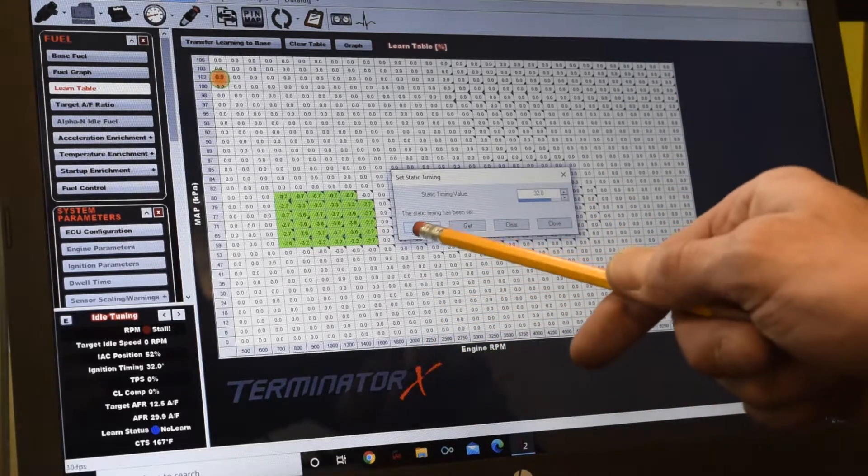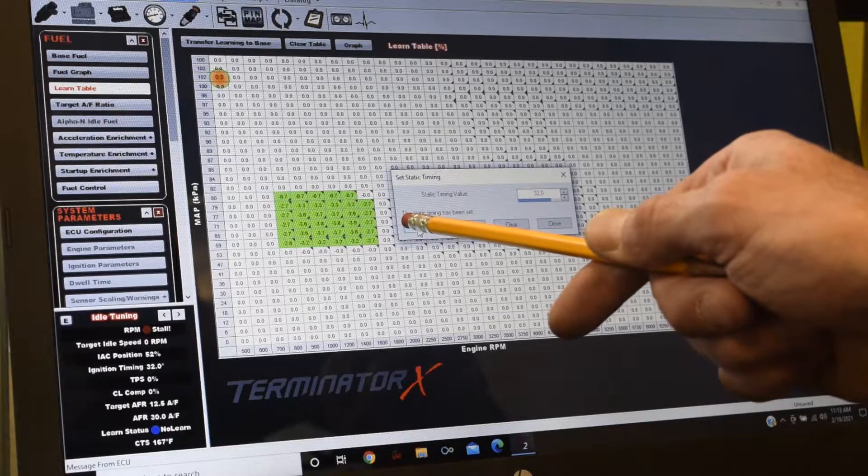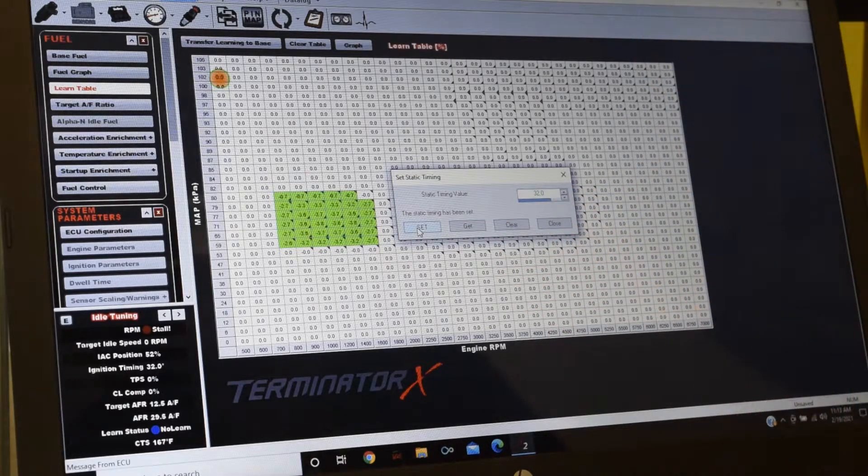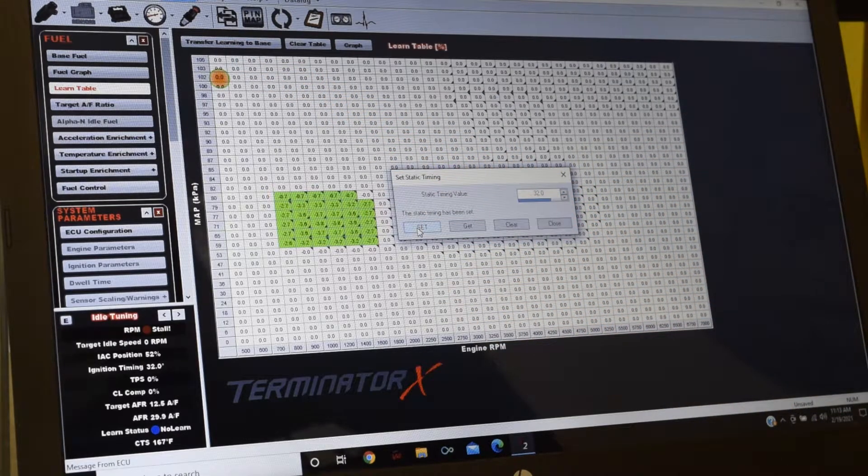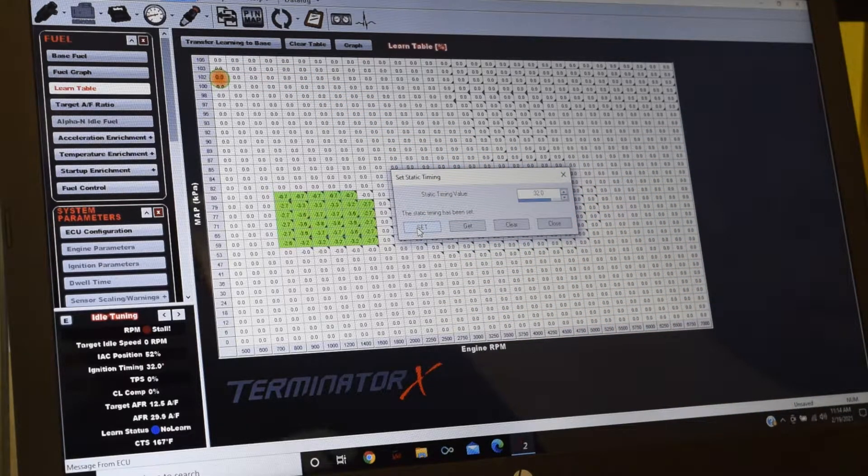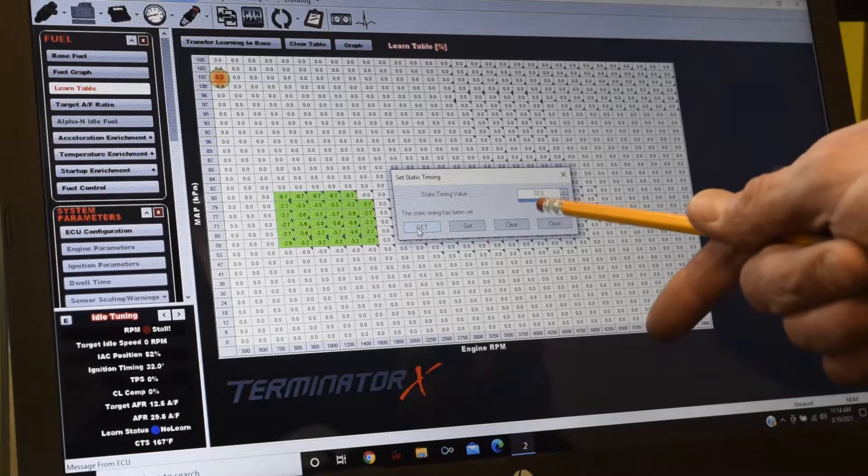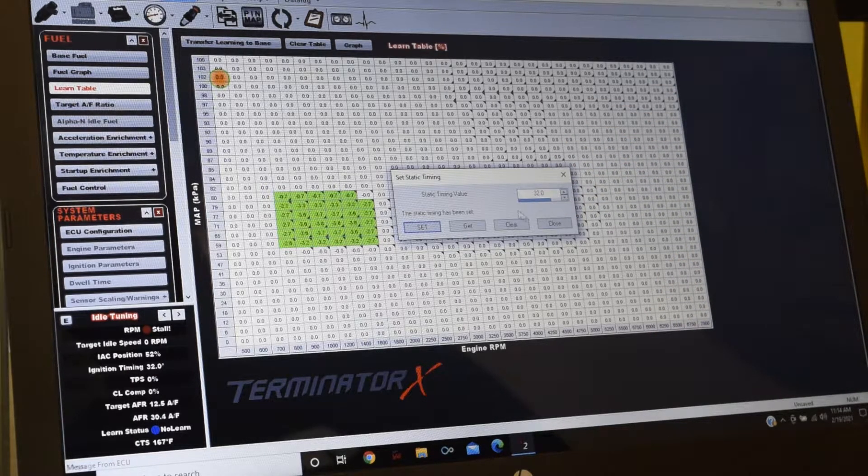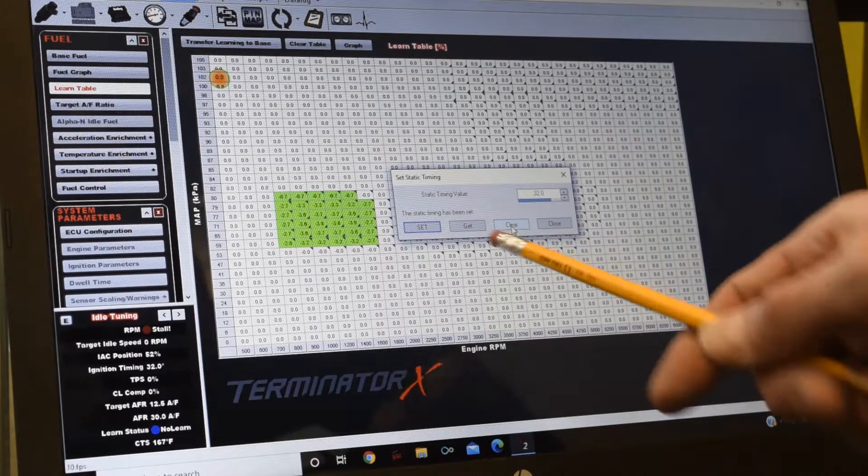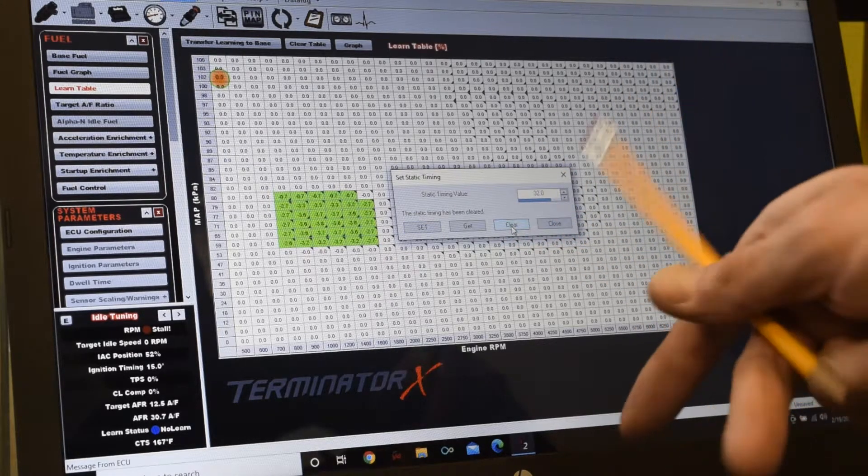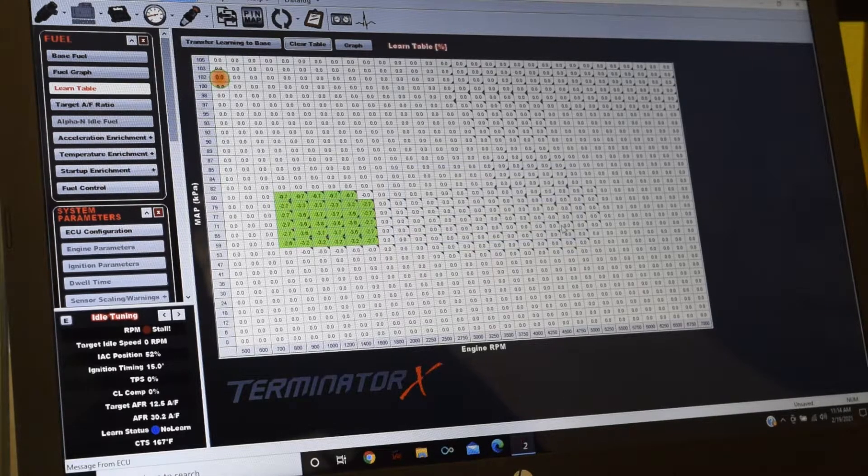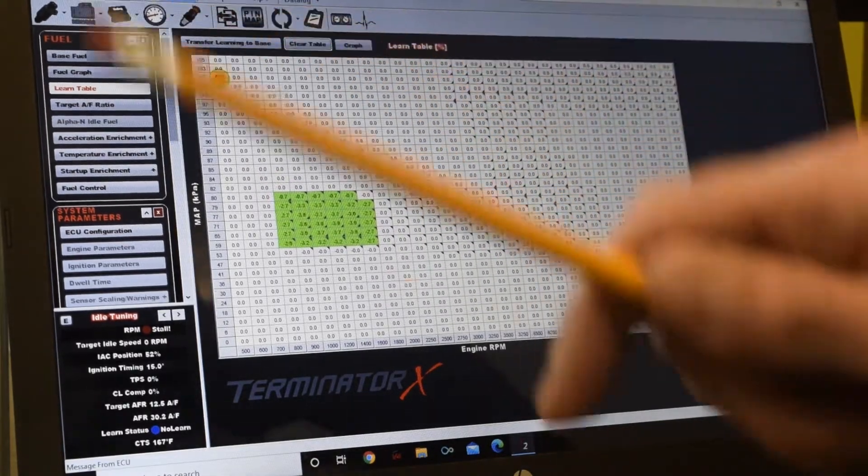When you're done, you'll notice it has a message: the static timing has been set. You can now go out to the engine and point your light at the balancer and make sure it reads what we're commanding here. I'll show you why we command 32 also. When you're done you'll just click clear and it will tell you that it's been cleared.